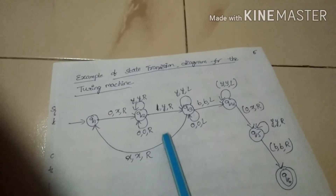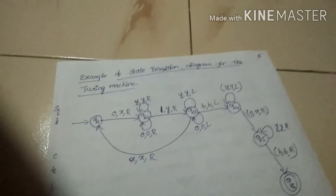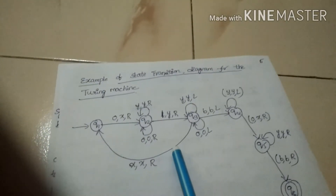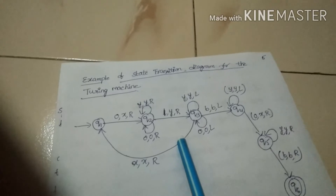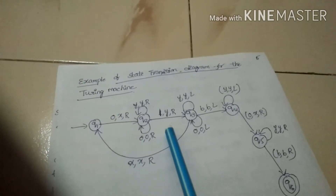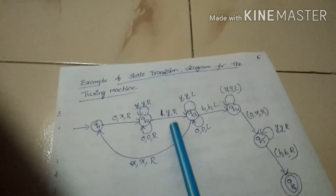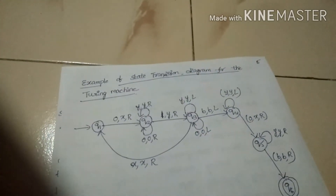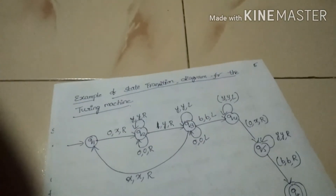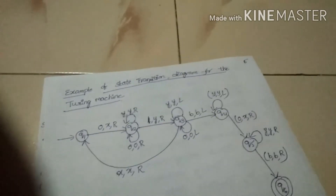In the transition diagram, there is a directed edge from state Q2 to Q3 with label (1, Y, R). The value 1 will be replaced by Y and the head position will move to the right direction.